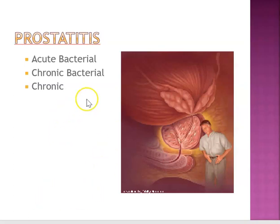Chronic bacterial prostatitis is going to be from recurrent UTI or stones in the prostate, and this is typically from E. coli, Proteus, or Klebsiella. The signs and symptoms are urinary frequency, urgency, dysuria, low back pain, and perineal discomfort.